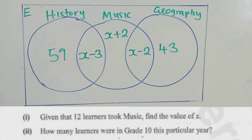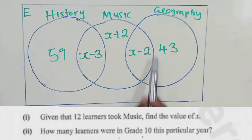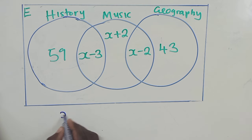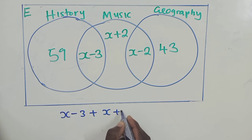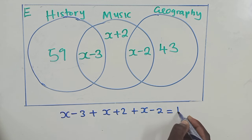So the first question reads, given that 12 learners took music, find the value of x. So we know that 12 learners took music. All the learners in music here are supposed to be 12. So what we are going to do is say x minus 3 plus x plus 2 plus x minus 2 is equal to 12.